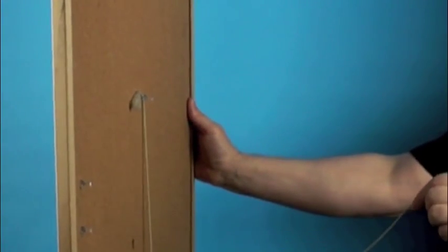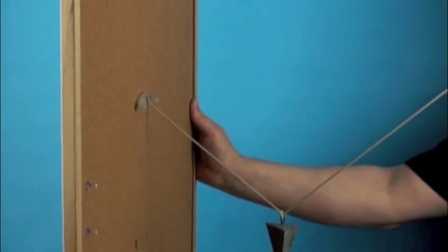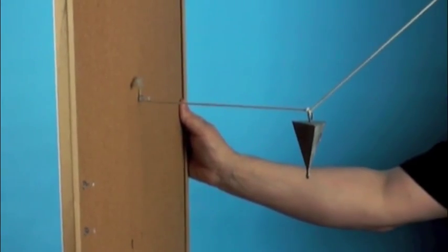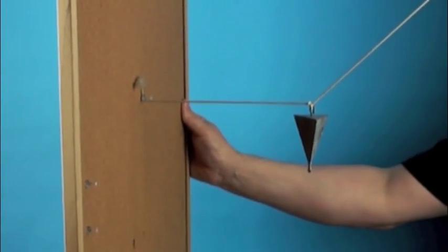To help us understand the first question, look at this. A string is attached to a wall. There's a weight placed in the center of the string, and I lift it at an angle as shown.